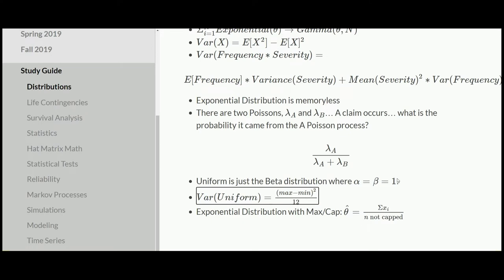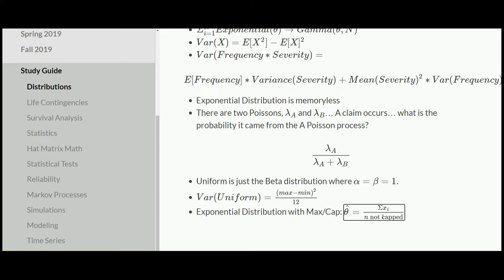If you don't feel like memorizing the uniform variance, knowing that uniform is beta with alpha equal one and beta equal one should suffice. Finally, exponential distribution with a cap: if losses come in and the insurance company only pays up to a certain limit, and you want to take a sample of paid-out losses to estimate theta for the uncapped distribution, you take the sum of losses paid out divided by only the number of losses that were not capped. For example, with a ten-thousand dollar limit, if you have a six-hundred dollar loss, a thousand dollar loss, and a ten-thousand dollar capped loss, you'd divide by two because only two of the three losses weren't capped.